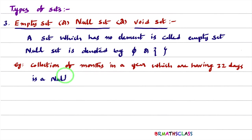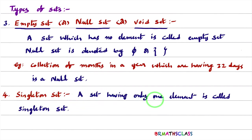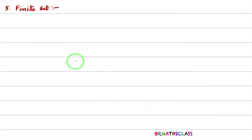The fourth synopsis is singleton set. A set which has only one element is called a singleton set. For example, a set containing only one element — that set is a singleton set because it is having only one element.